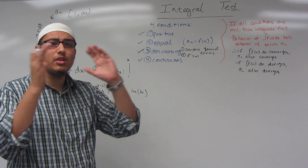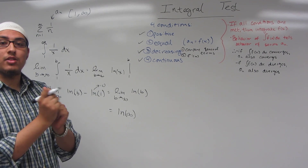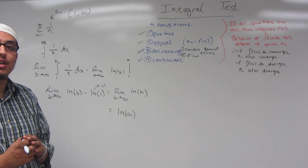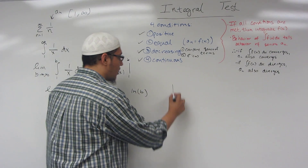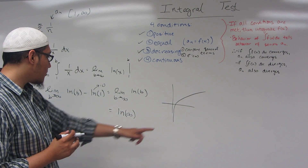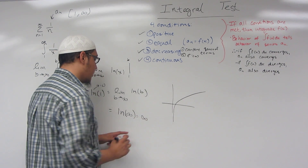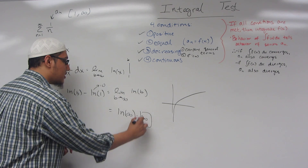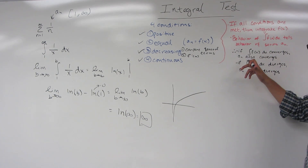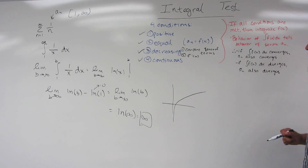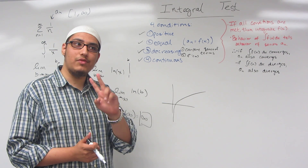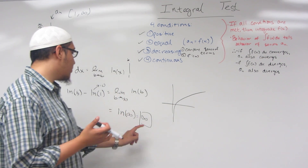To evaluate this limit, we substitute infinity in for b: the natural log of infinity. Since infinity is an incredibly large number, and the natural log function is always increasing, substituting infinity gives us infinity. So the integral diverges. Since the integral diverges, the series also diverges. This confirms what we already knew about the harmonic series — it diverges. We proved it two ways: by the p-series test and by the integral test.